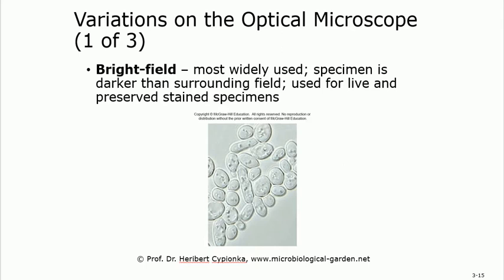Still talking about the optical microscope, you can use three different fields. The bright field is the most commonly used. In this case the specimen will be darker than the surrounding field. You use bright field for live, preserved, and stained specimens — that's important to remember: live, preserved, or stained specimens use the bright field.